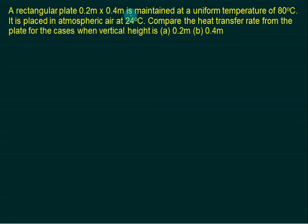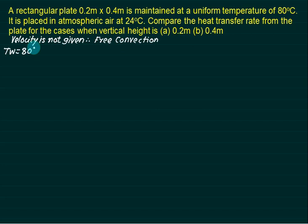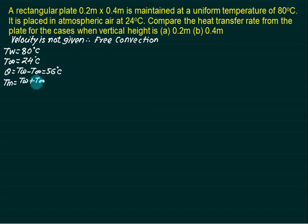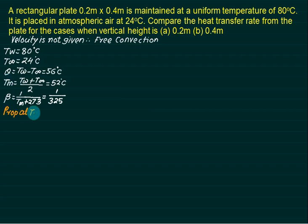Example 3: A rectangular plate 0.2 m × 0.4 m is maintained at 80°C in atmospheric air at 24°C. Compare heat transfer for two cases: vertical height of 0.2 m vs 0.4 m. Since no velocity is given, this is free convection. Excess temperature θ = 80 − 24 = 56°C. Mean temperature = (80 + 24)/2 = 52°C. β = 1/(52 + 273) = 1/325 per Kelvin.